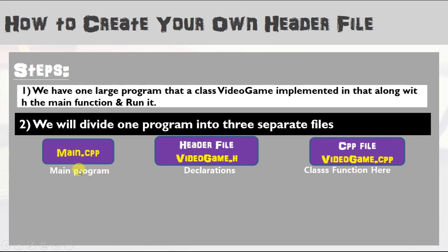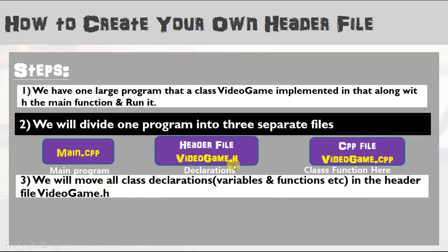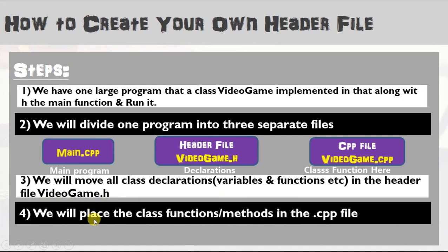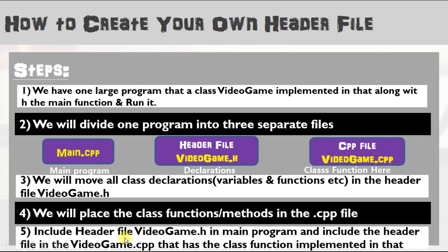The header file videogame.h contains all declarations of the concepts we will use in the class. The third file is videogame.cpp, which contains variable initializations and functions code. Finally, once we are done, we will include the header file videogame.h in the main program so that the compiler can recognize the variables and functions used in the program.